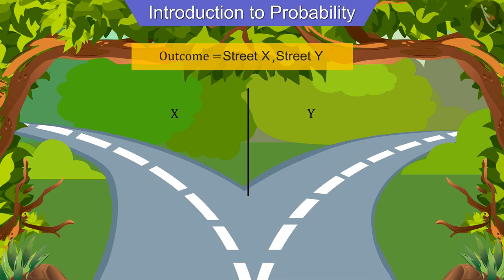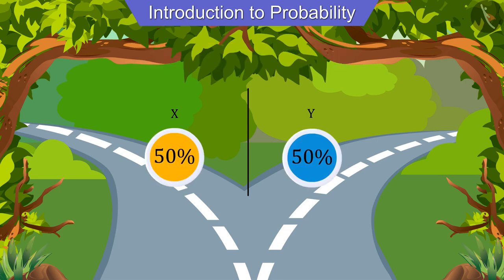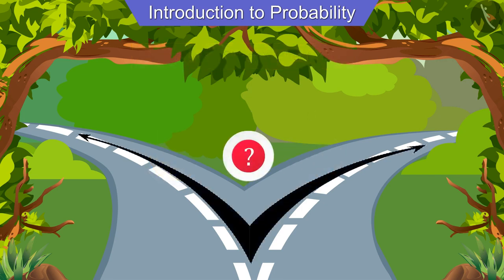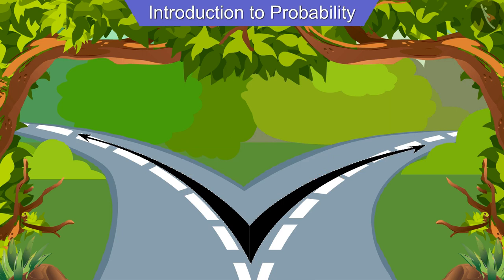As Joseph is not able to find any signboard on the road, we can say that the possibility of either road being the right one is 50 percent. Why did we make such a prediction? Because we don't know yet as to which of these two roads is the right one, therefore we cannot be biased towards any of the two roads.